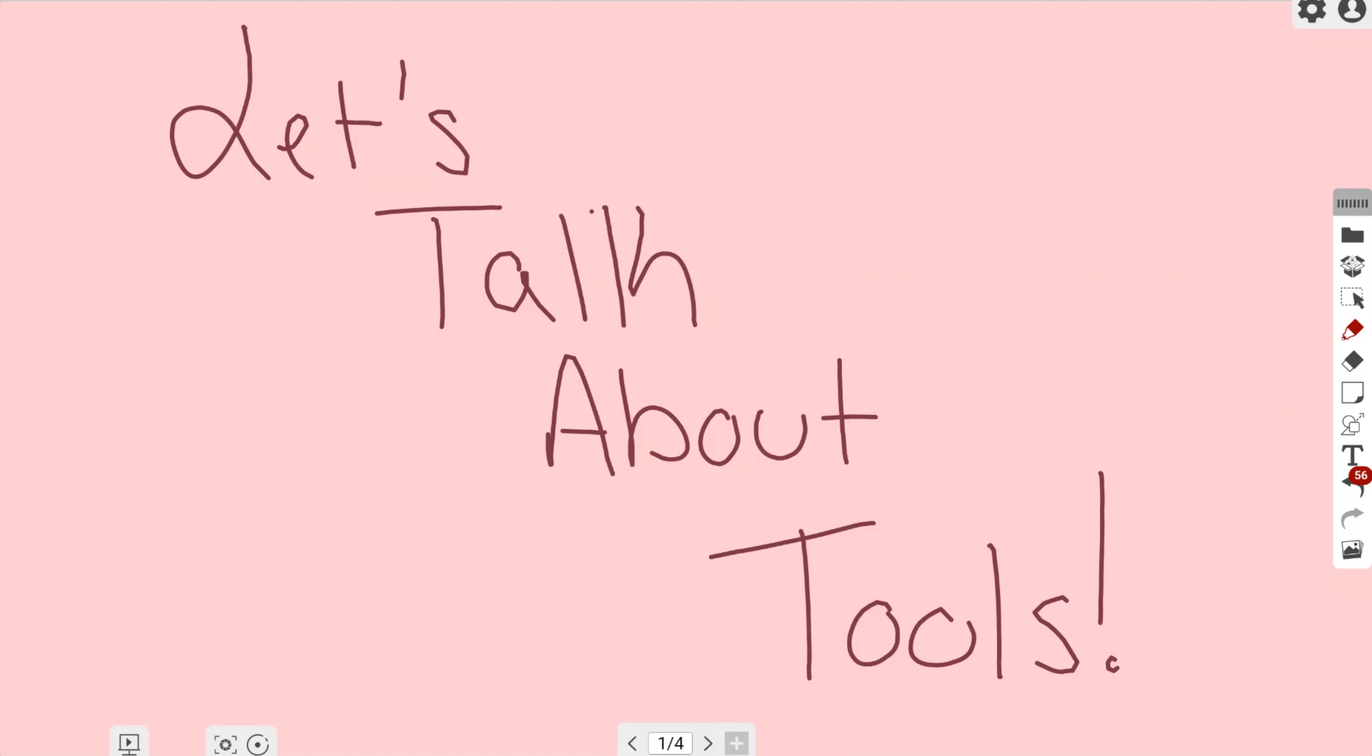In this video about Let's Talk About Tools, the tool we're going to be talking about is the eraser tool. This tool can be located directly under the pen tool or right above the sticky note tool in the main toolbar on the right-hand side of the screen.